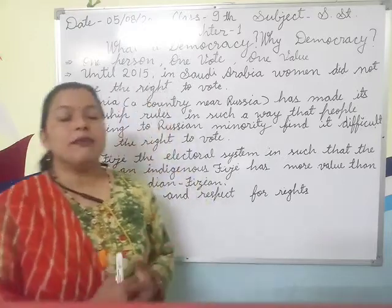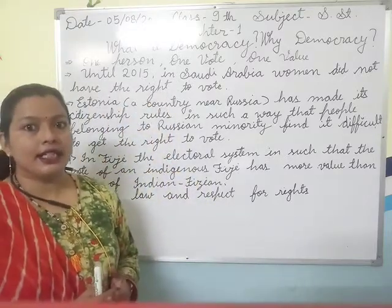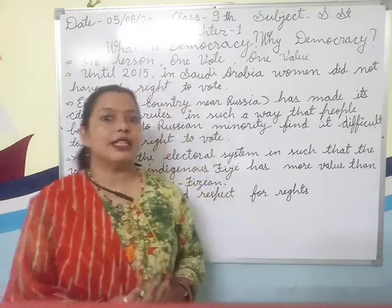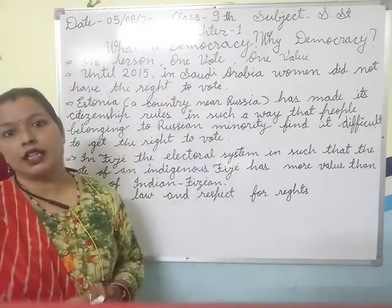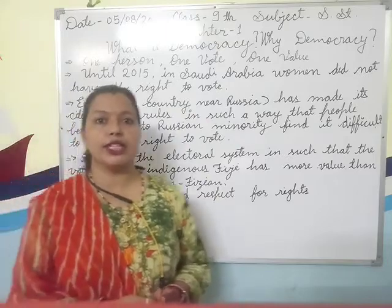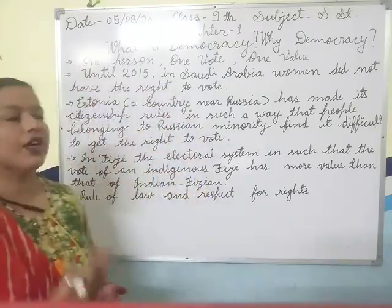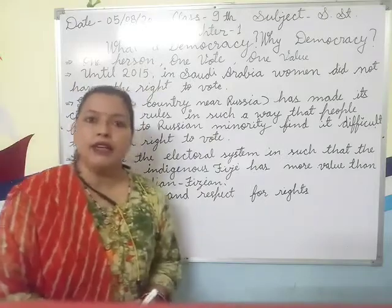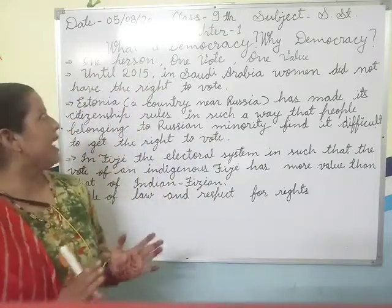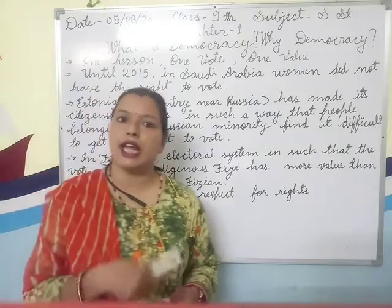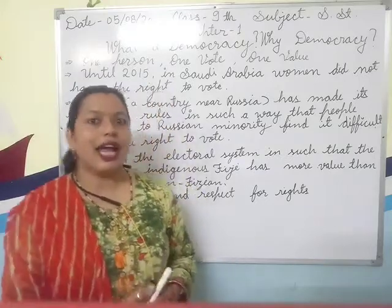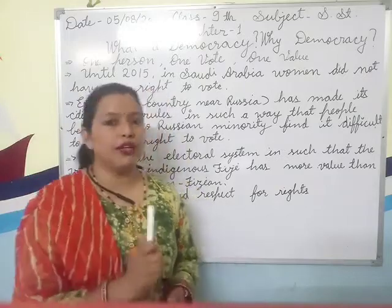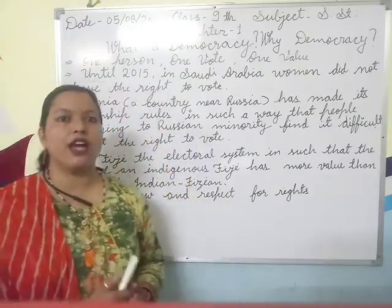The second term I have explained is the form of government. It means that there may be direct democracy and indirect democracy. The next topic I have already discussed is one person, one vote, and one value. One person can cast only one vote, and that vote must have only one value.